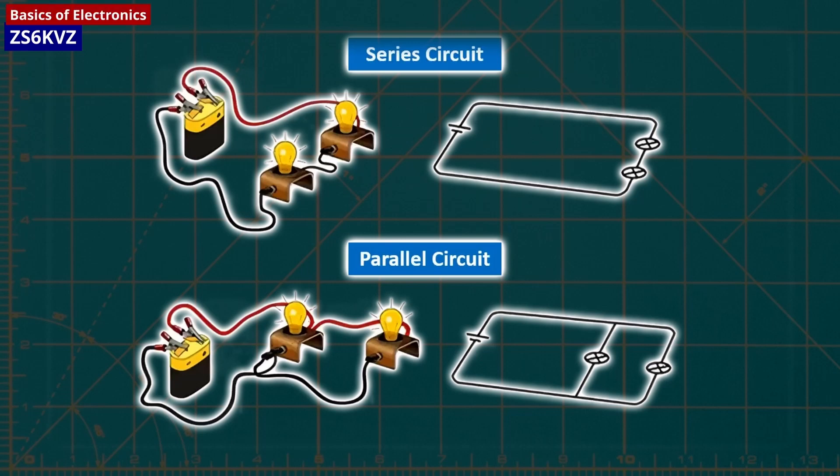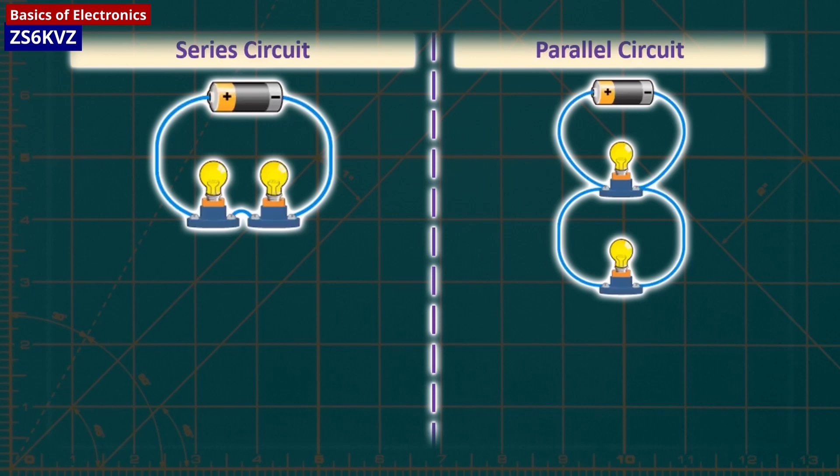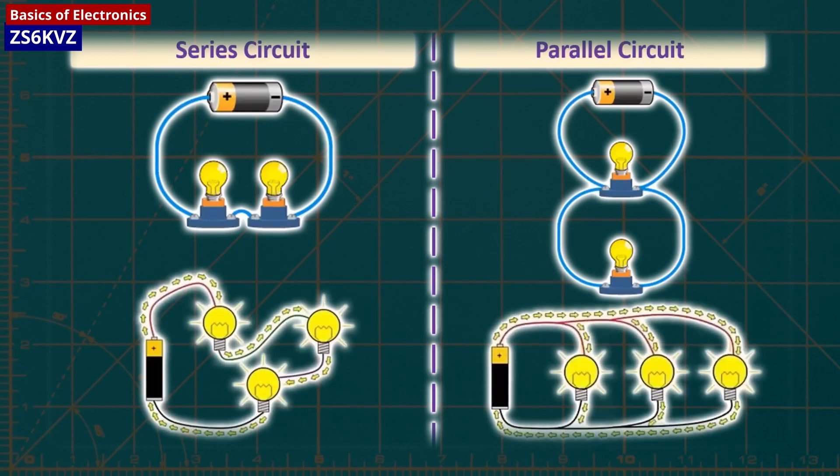There are two different ways in which you can wire things together, series and parallel. In the circuits on the left, the lamps are connected in series with the battery. In series connected circuits, the same current flows through all loads.